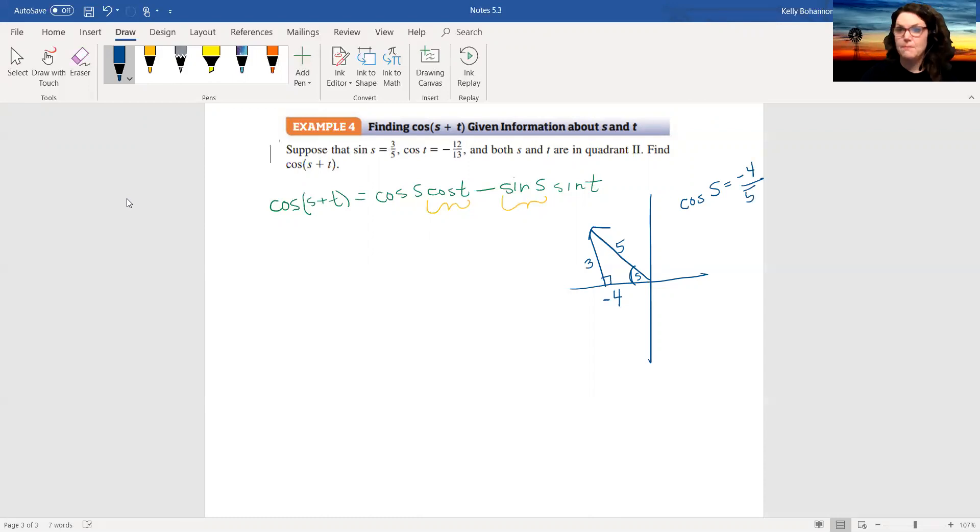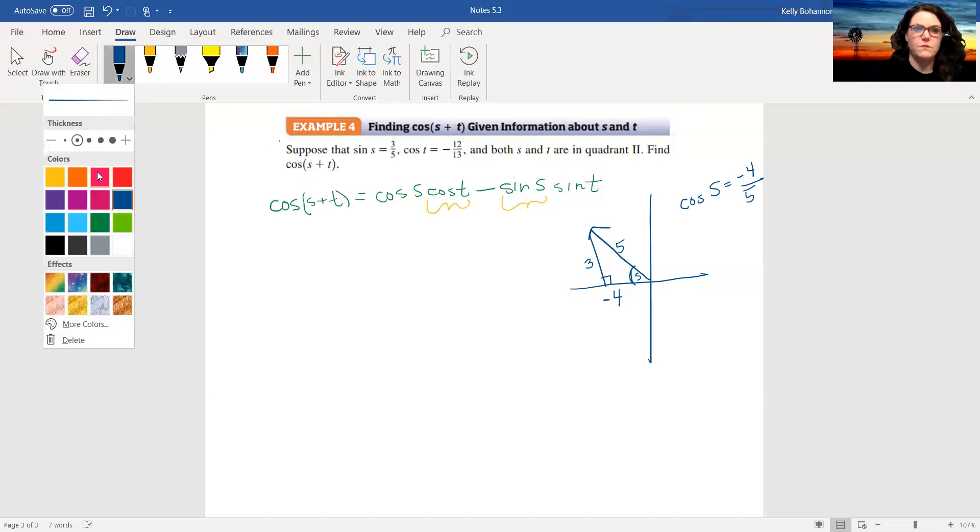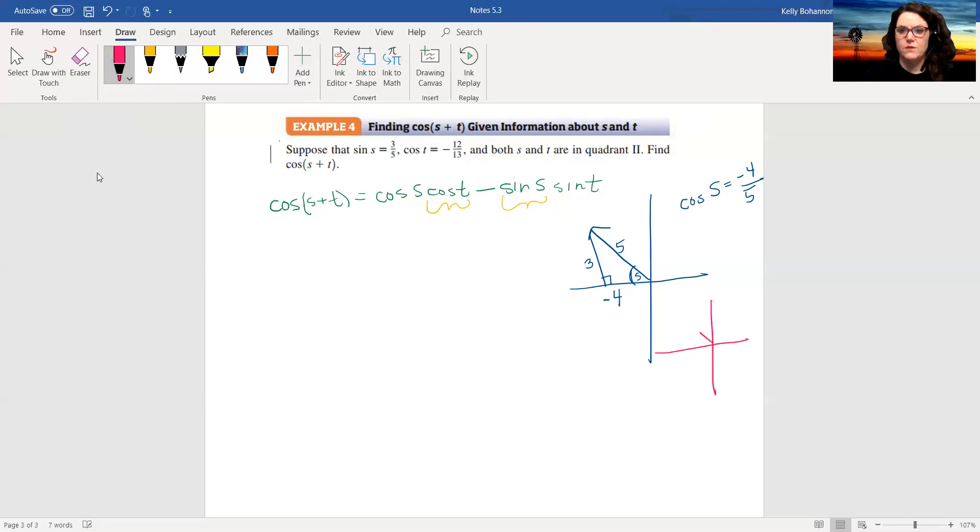Okay, so now I'm going to just do a whole other coordinate grid so I don't confuse myself. Alright, so here's my other coordinate grid also in quadrant 2. This time the angle is angle T. This time my hypotenuse is 13 and it's cosine, so it's the adjacent piece, so it's negative 12 over 13. So I need to figure out this missing leg in order to find sine.